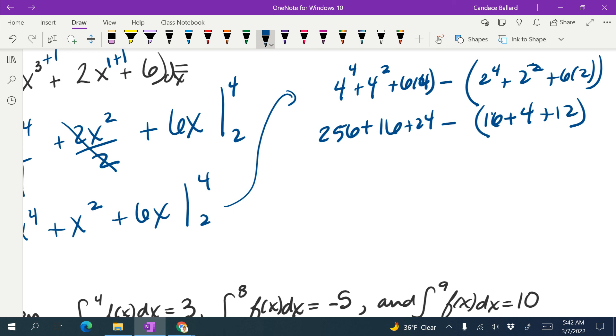So 256 plus 16 plus 24 is 296 minus 16 plus 4 plus 12 is 32. And when you subtract those, I got 264.